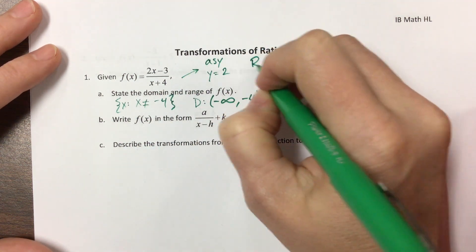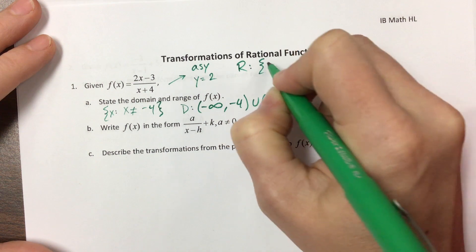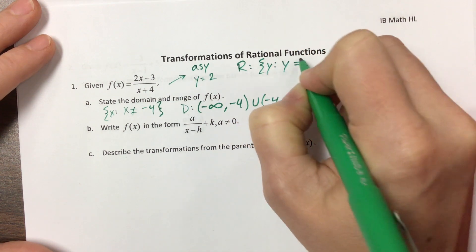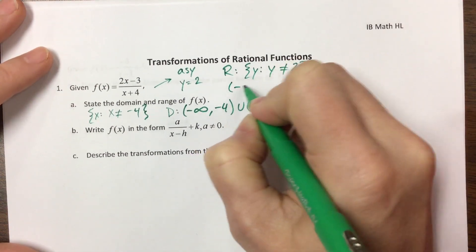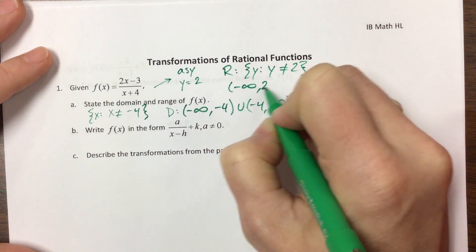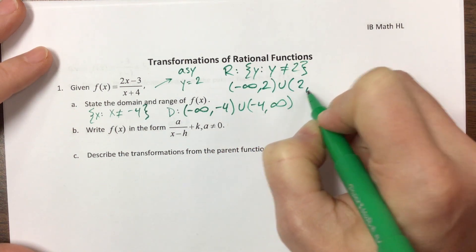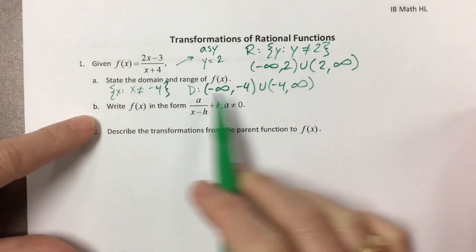And so the range, you can either tell me it's a set y such that y is not equal to two, or you could tell me it's negative infinity to two. We pick it up again and go from two to infinity.